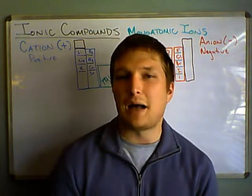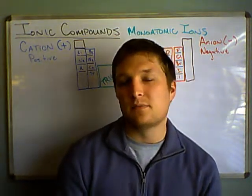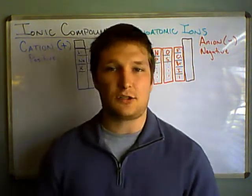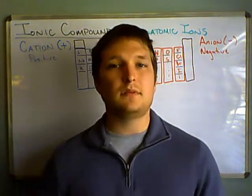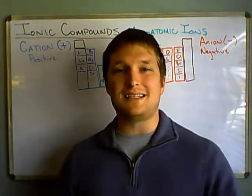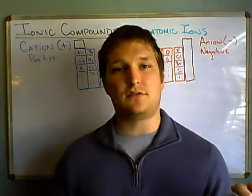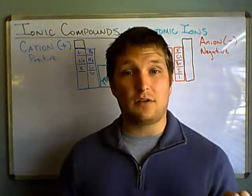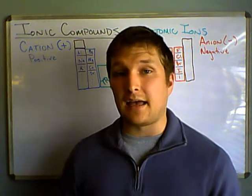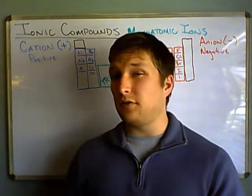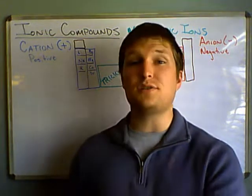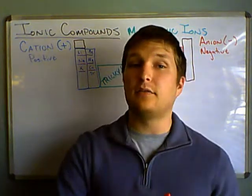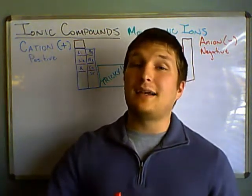Most atoms like to become ions. They do that by gaining or losing electrons. If an atom gains an electron, then it just gained negative charge — it has an overall negative charge, and we call that an anion. However, if an atom loses an electron, it just lost negative charge so it became more positive — we call that a cation.